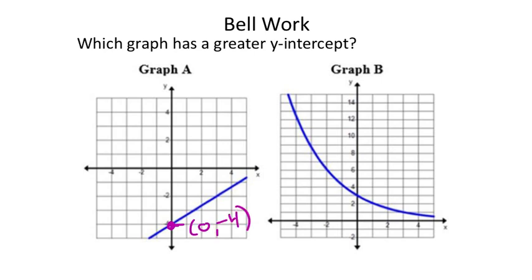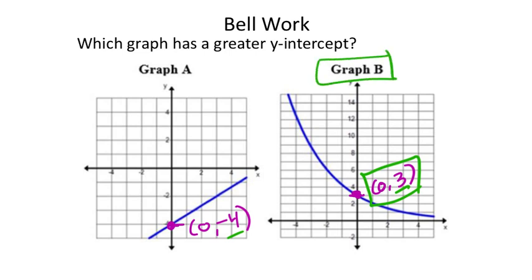For graph B, the exponential graph, I see that the blue line curves into the y-axis, giving us the ordered pair (0, 3). So really, all we're comparing is negative 4 and positive 3. Since positive 3 is greater, graph B has the greater y-intercept.